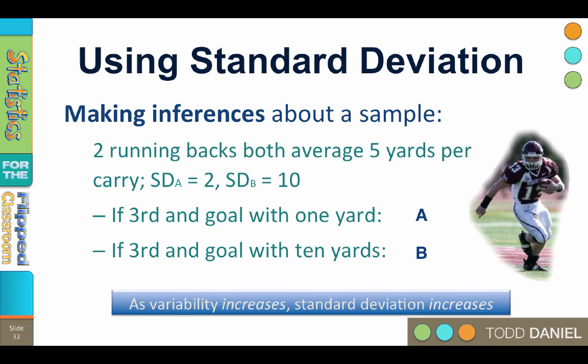So let's quickly review. The sum of squares, variance, and standard deviation all represent the same thing: the variability in the data. First you compute the sum of squares, then you divide it by n to get the variance, and then you take the square root of the variance to get the standard deviation.